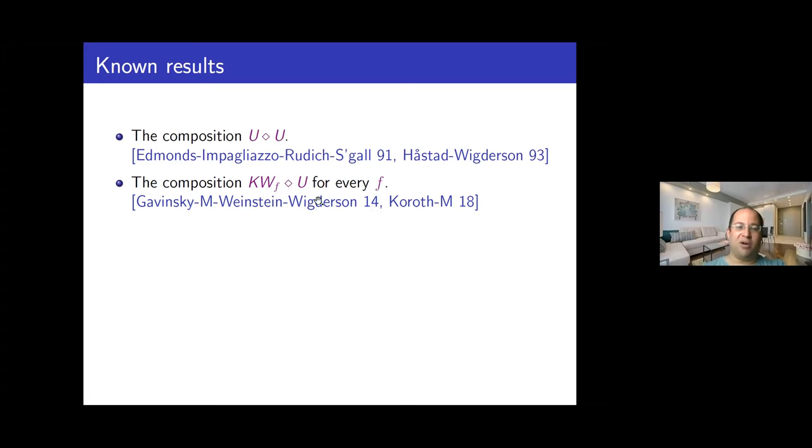In a joint work with Gavinsky, Dima Gavinsky, Omri Weinstein, and Avi Wigderson, and then with Sagit Koros, we managed to prove such a natural analog of the conjecture for the composition of a KW relation of a function with the universal relation. I'd like to think about it as going half of the way: we want to prove the conjecture for the composition of two KW relations; we know how to prove it for two universal relations; and now we could prove it for one KW relation and one universal relation. Unfortunately, it seems like we went the easy half of the way and the other half is much harder.